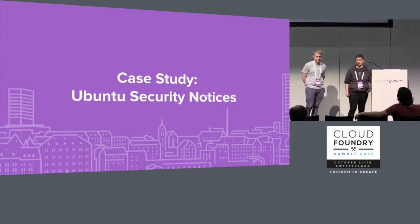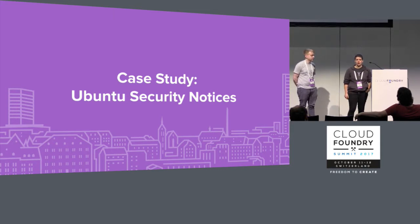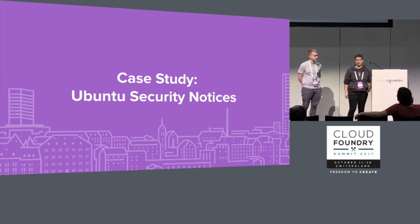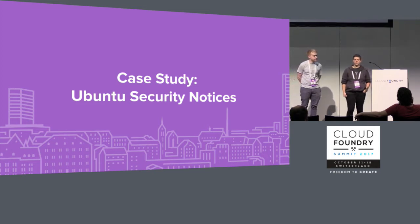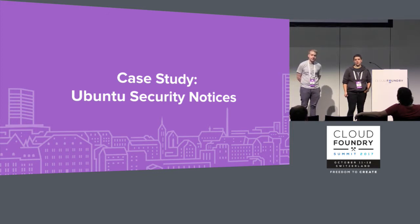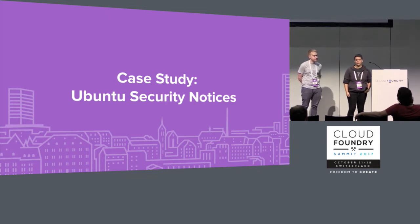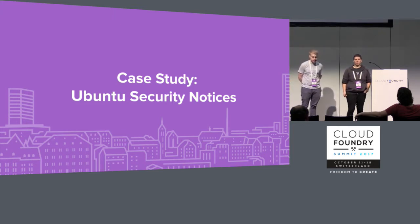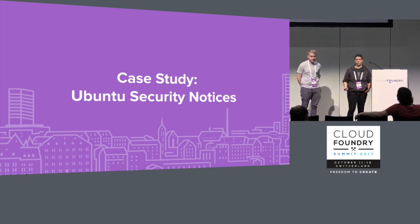We're going to talk about Ubuntu security notices, which we also refer to as USNs. They are notices put out by Canonical about the Ubuntu distribution of Linux, and a USN usually contains one or more CVEs. Because the Bosch stem cells and the rootFS rely so heavily on Ubuntu, it's easy for us to patch a lot of things quickly by patching for a particular USN.